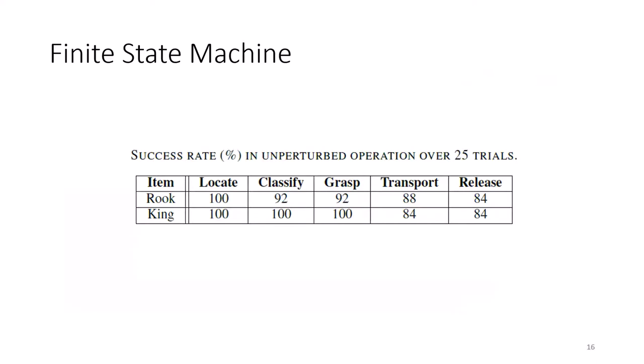The performance of the finite state machine through the tasks of autonomous and unperturbed object localization, classification, grasp, transport, and release was characterized. This table shows the success rate over 25 unperturbed trials with a short object, which is the rook chess piece, and a tall object, which is the king chess piece. Object localization was found to be particularly successful with a success rate of 100% for both objects.